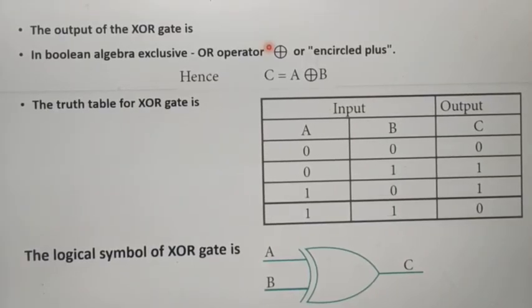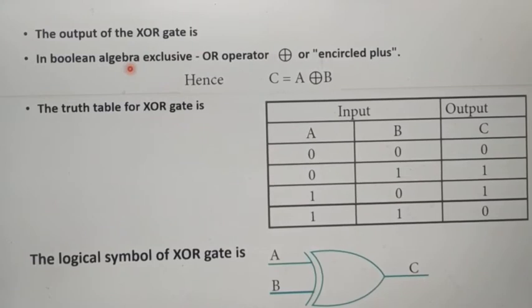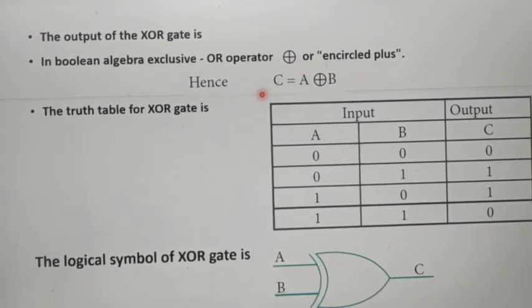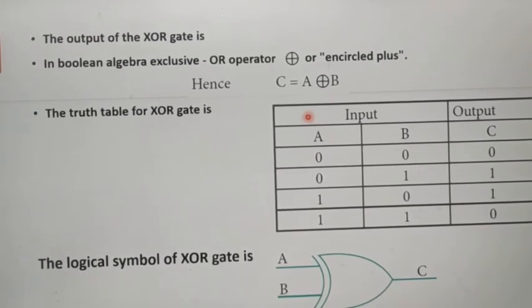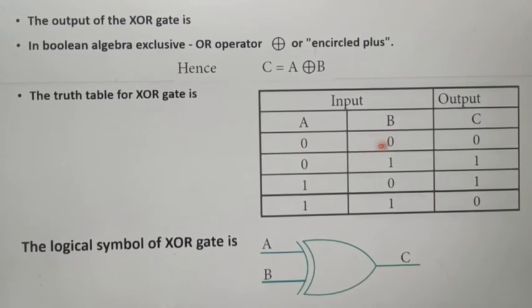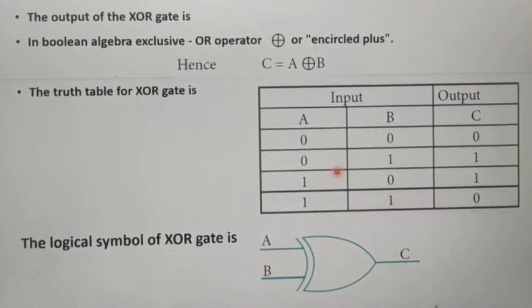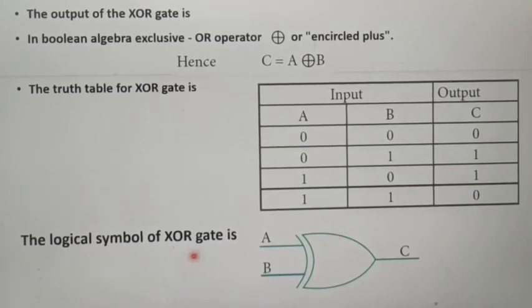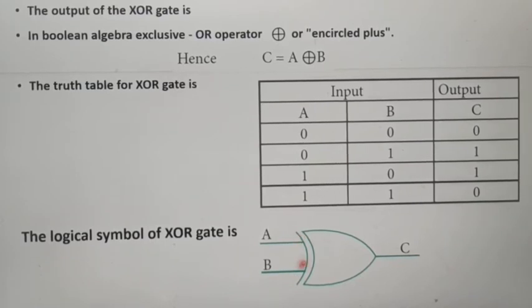Next we can see how to write the output for the Exclusive OR Gate. The Exclusive OR operator is represented by the encircled plus symbol (⊕) in Boolean algebra. So we can write its output as C equals A ⊕ B, read as C equals A Exclusive OR B. In the truth table for Exclusive OR Gate, if both inputs are the same (0,0 or 1,1), our output is false (0). If both inputs are different (0,1 or 1,0), our output is true (1).